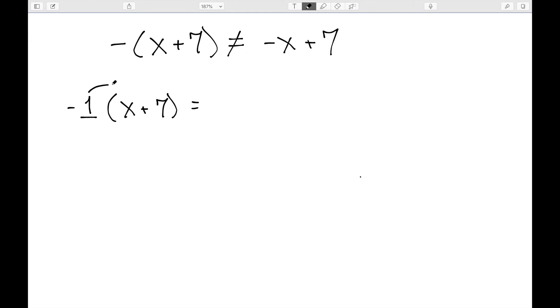And then distribute: -1 times x is -x, and -1 times 7 is -7. So we do have to make sure to distribute a negative sign throughout the entire parentheses.